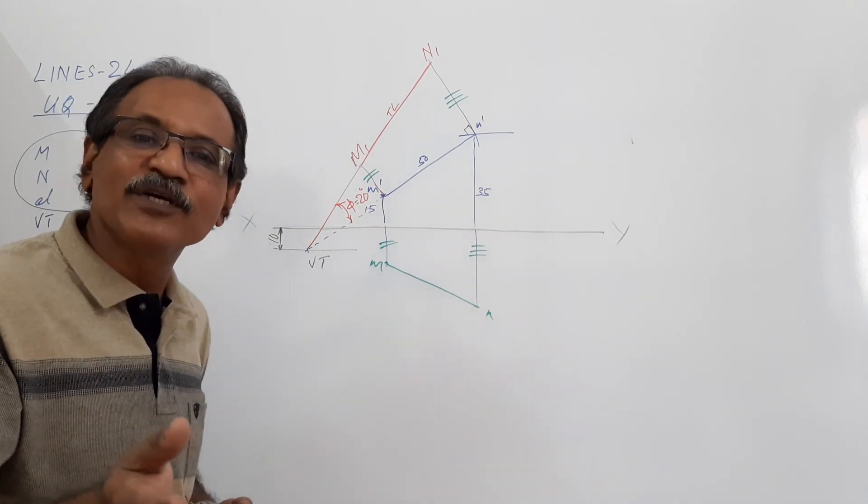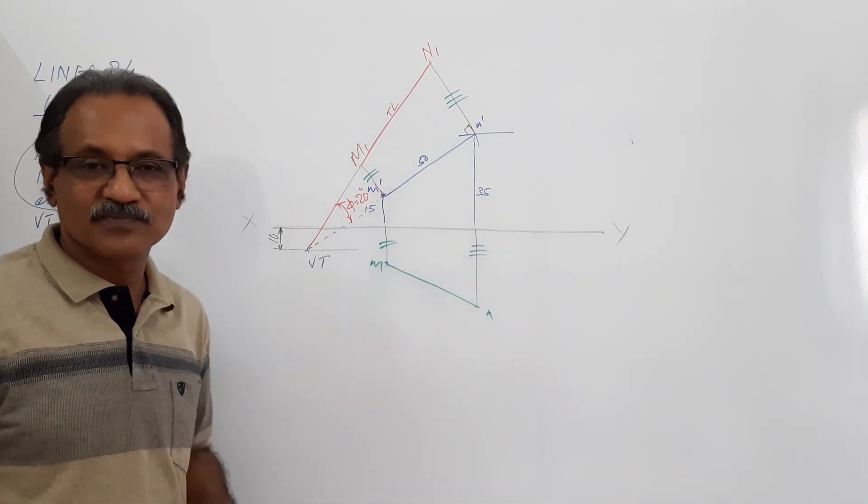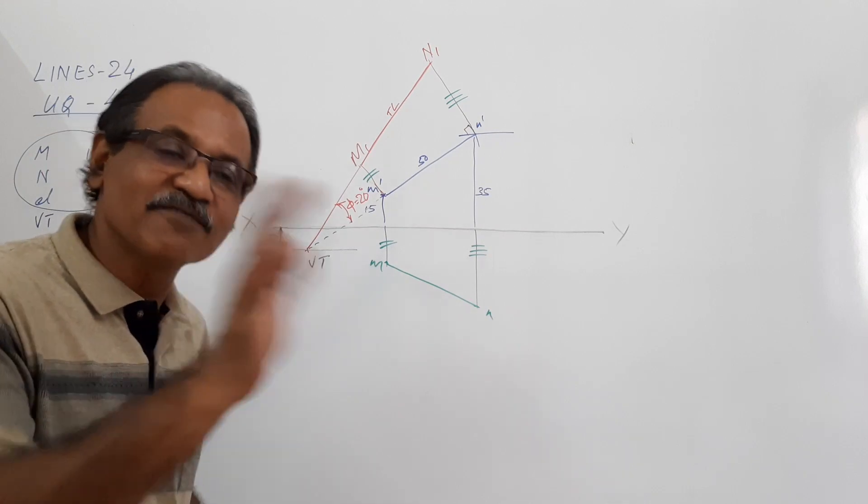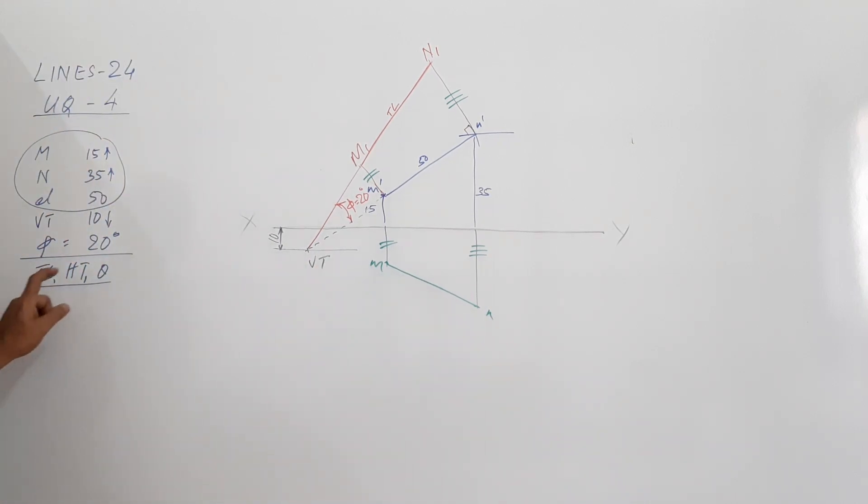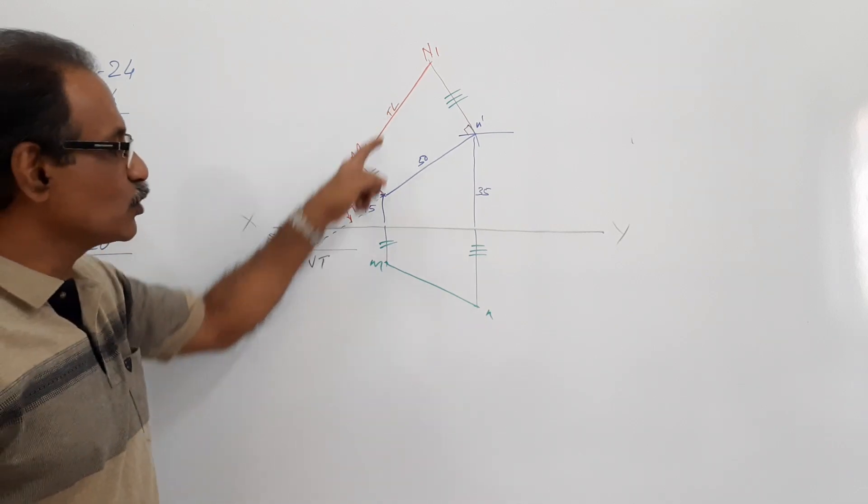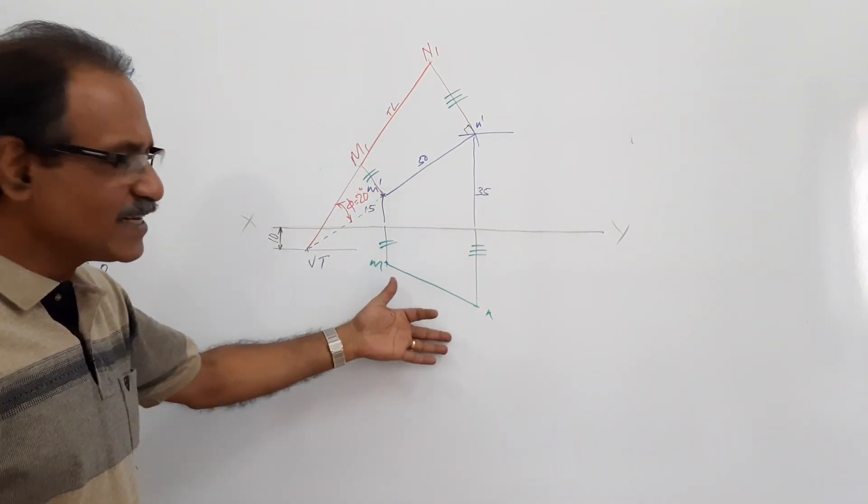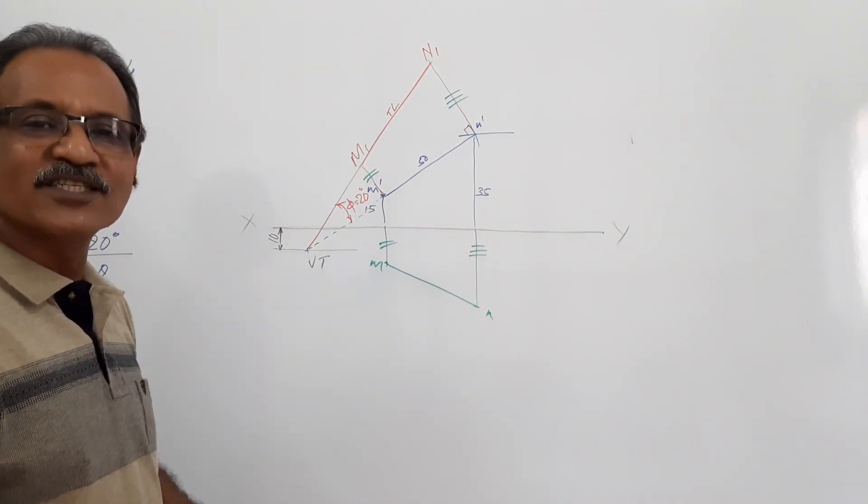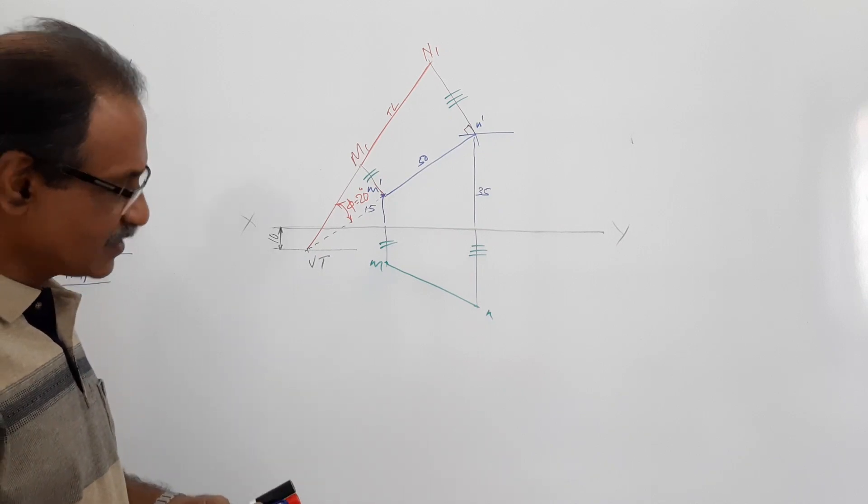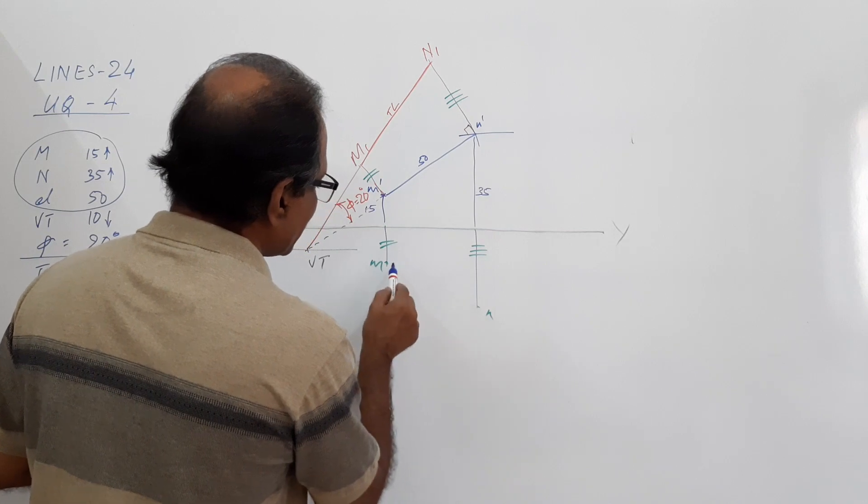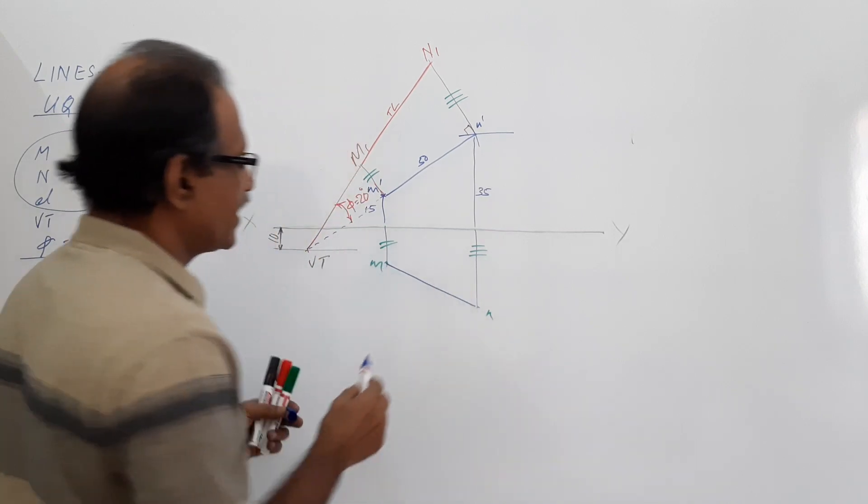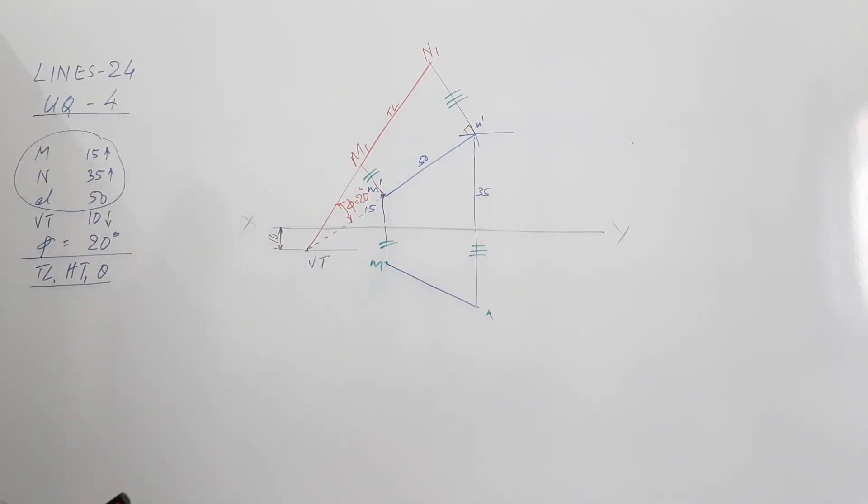You are doing trapezoidal in the reverse direction. Now you are asked to find out true length, theta. You have already obtained true length. Theta and HT you can obtain by making a trapezoidal transmission here.